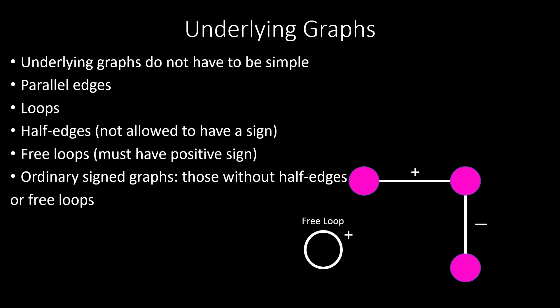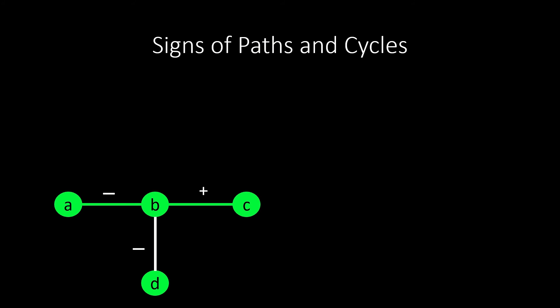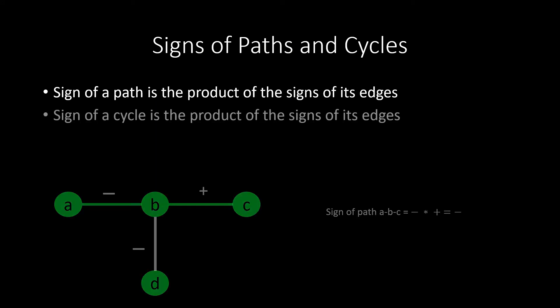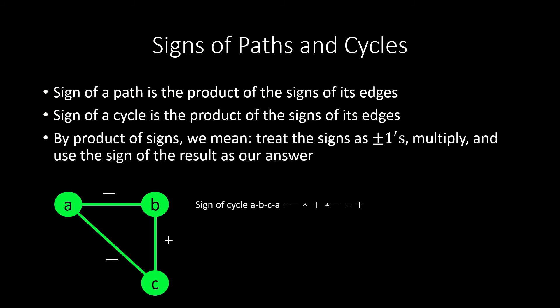Just like edges have signs in a signed graph, we can define paths and cycles to also have signs. The sign of a path is the product of the signs of its edges. Similarly, the sign of a cycle is the product of the signs of its edges. By product of signs, we mean treat positive signs as positive ones and negative signs as negative ones, multiply them together, and use the sign of the result as our answer.